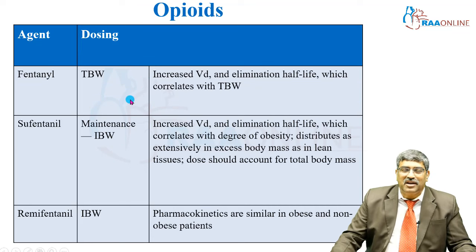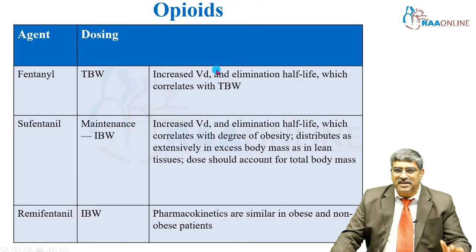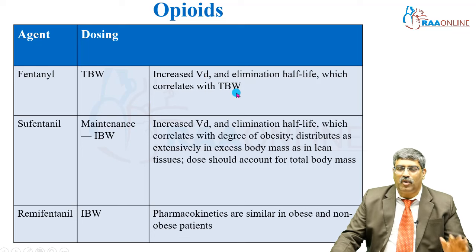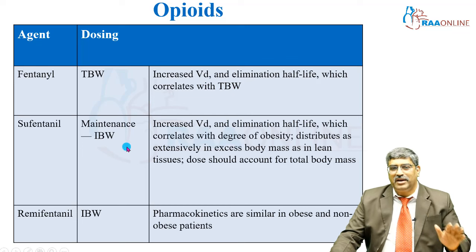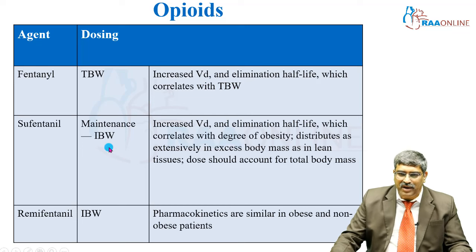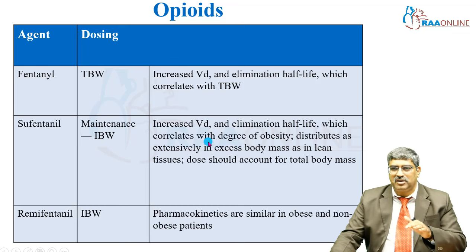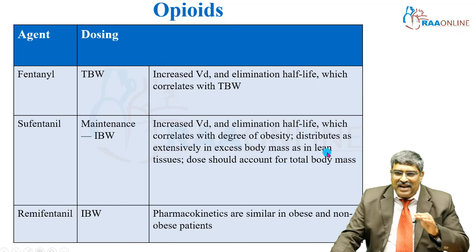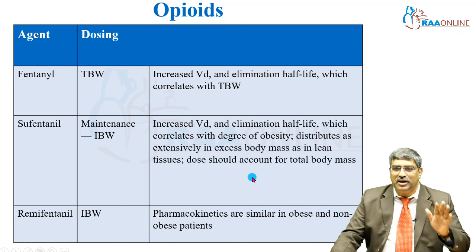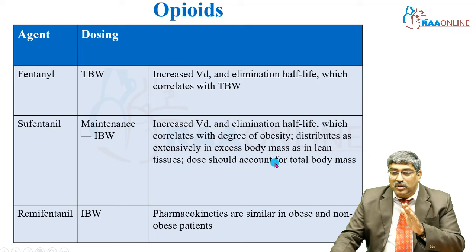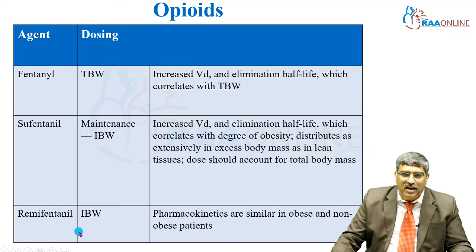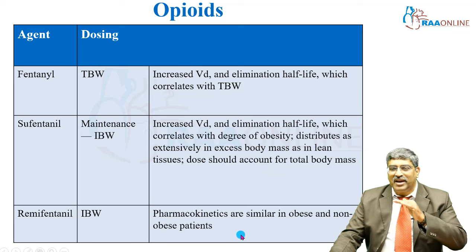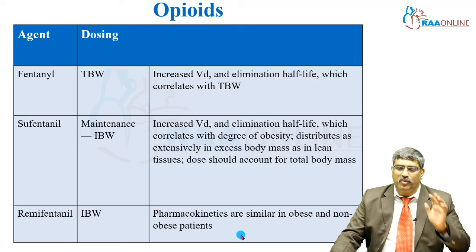For opioids — fentanyl: use total body weight; increased volume of distribution and elimination half-life correlate with total body weight. Sufentanil: use ideal body weight for maintenance; increased volume of distribution and elimination half-life correlate with degree of obesity, and it distributes as extensively in excess body mass as in lean tissue, so dose should account for total body mass. Remifentanil: use ideal body weight; pharmacokinetics are very similar in obese and non-obese patients.